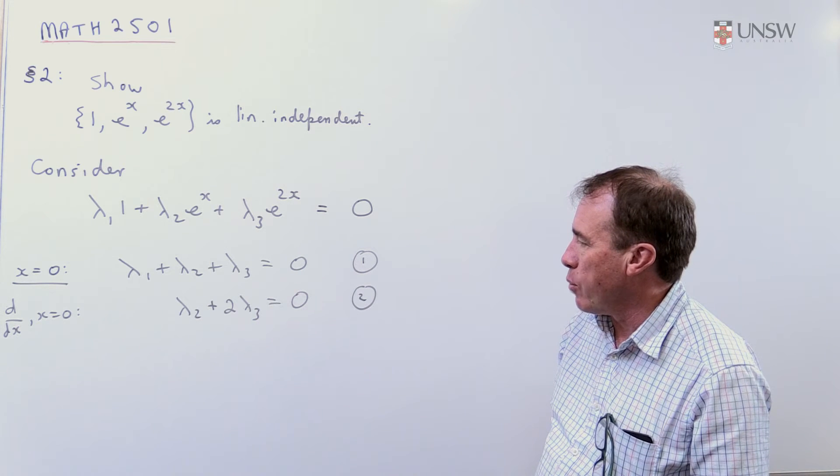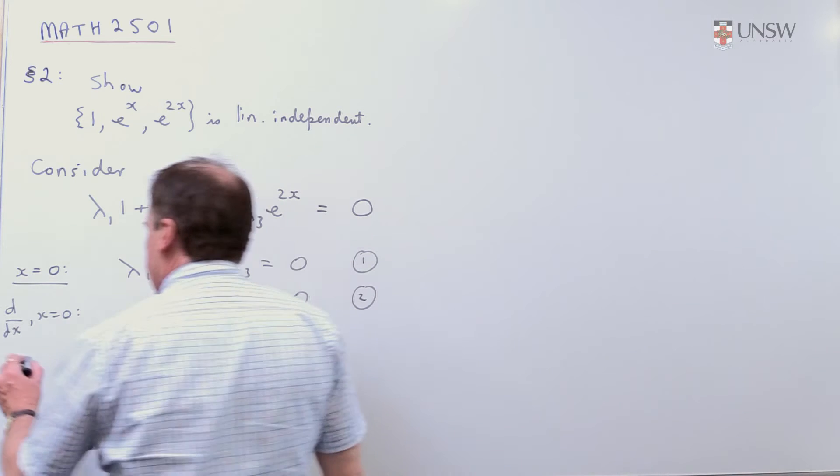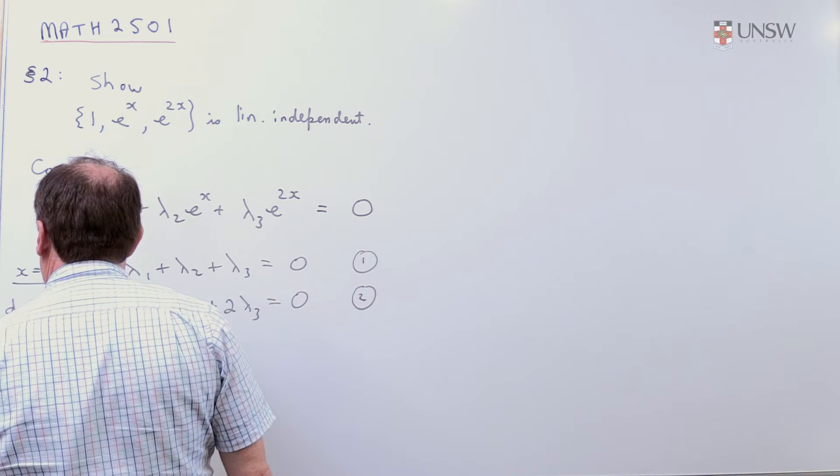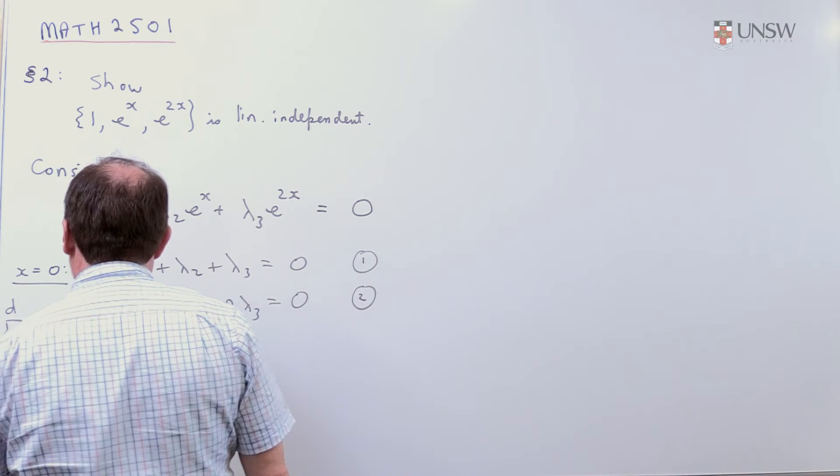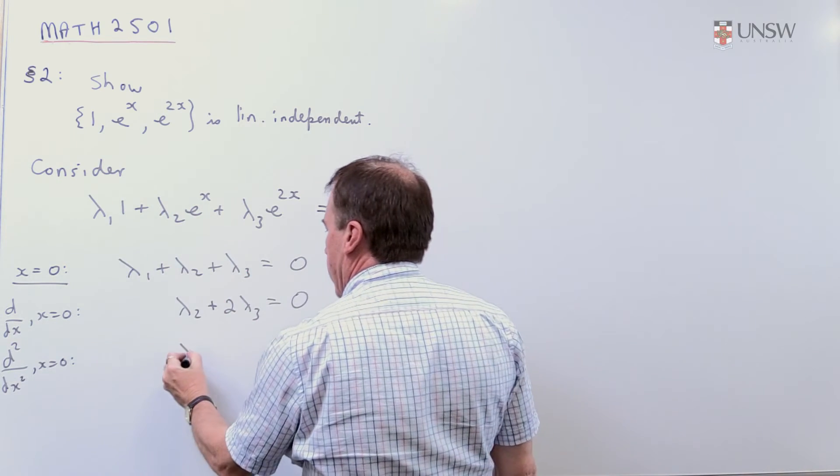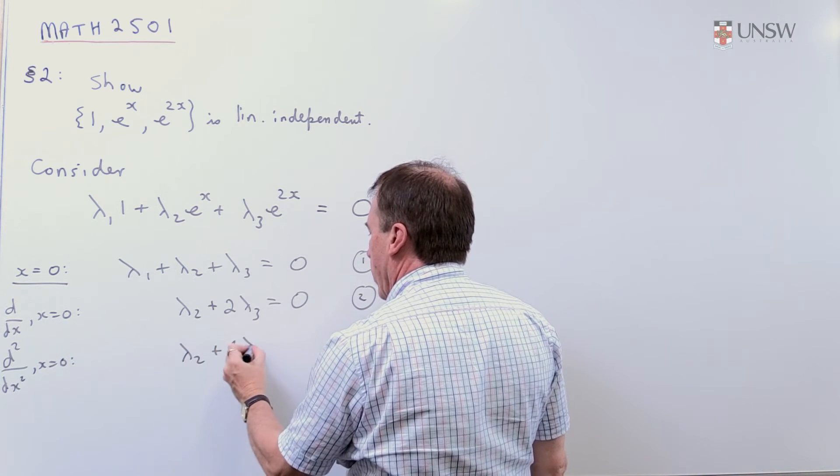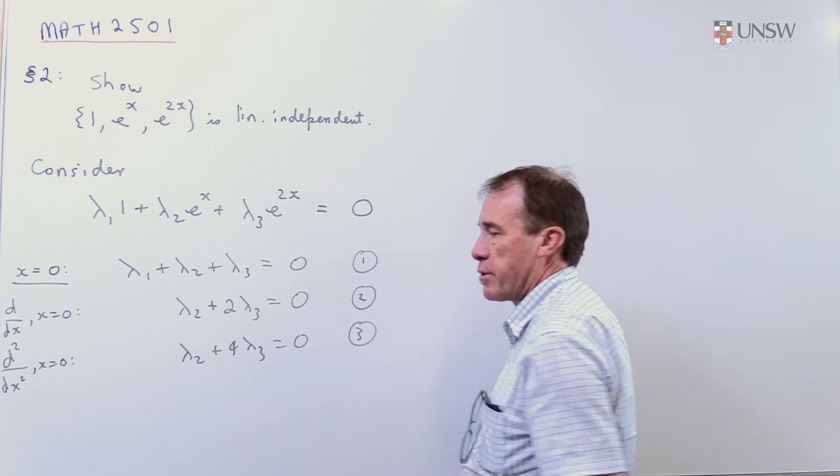Well, that's looking good. I want to get one more equation out, so I might as well differentiate it again. So I'm going to now take the second derivative, and again I'll put x is zero in. So that twice disappears, that twice, put x is zero, and you get lambda_2. This one twice, you'll get 4*lambda_3 is zero. And I'll call that equation 3.